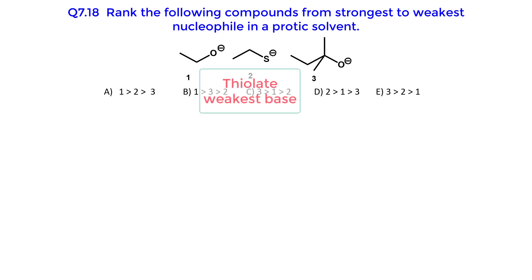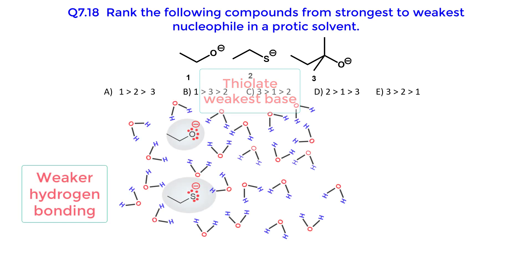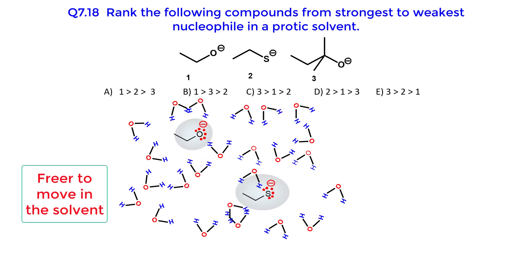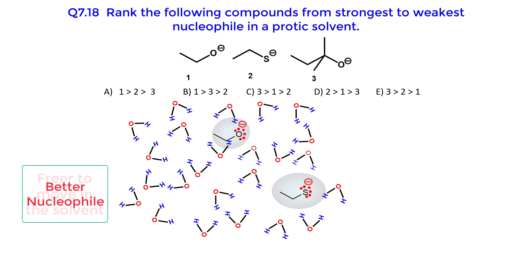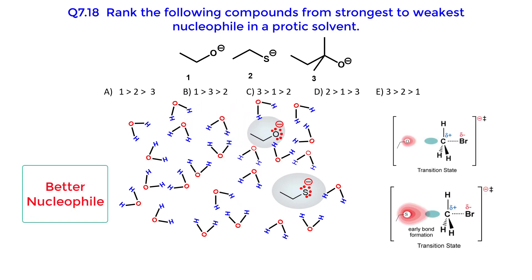The thylate ion is the weakest base. The hydrogen bonding to the solvent will not be as strong as with the alkoxide ions. The thylate ion will be less hindered or freer to move in the solvent, making it a better nucleophile. Sulfur is also more polarizable than oxygen, which also increases its nucleophilicity due to an earlier transition state. The thylate anion is the strongest nucleophile.